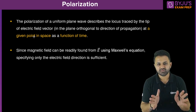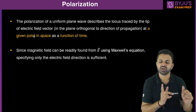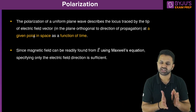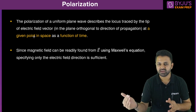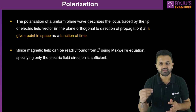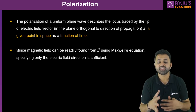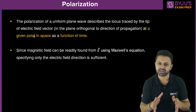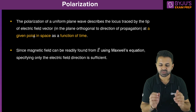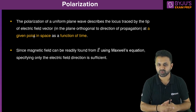Once you get the electric field, you have to take the plane perpendicular to the direction of propagation. Suppose the wave is traveling in the z direction — the perpendicular plane will be xy. If it is traveling in the x direction, the perpendicular plane will be yz. If it is traveling in the y direction, then the perpendicular plane will be xz. So first of all, we have to take the plane which is perpendicular to the direction of propagation.